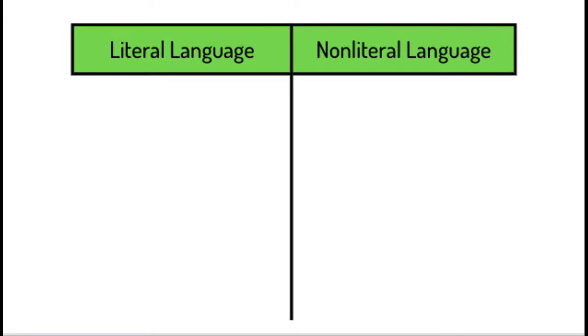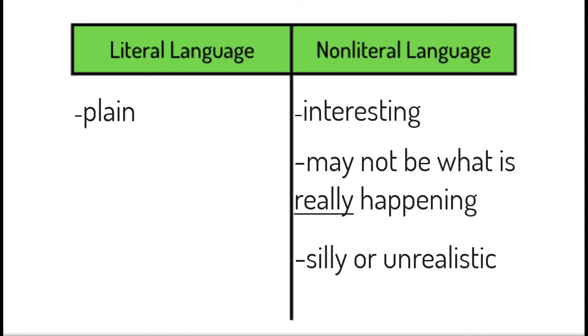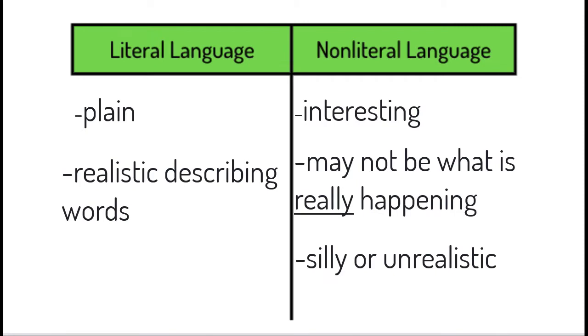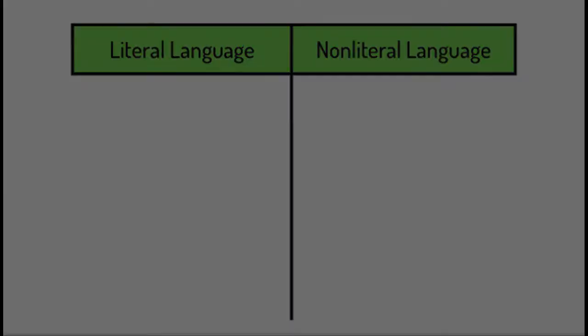Let's talk about the differences between literal and non-literal language. Non-literal language is a way of describing what is happening in an interesting way that may not necessarily be what is really happening — sometimes it's silly or unrealistic. Literal language is a plain way of describing what is happening with realistic describing words. This is more of a definition or real meaning.